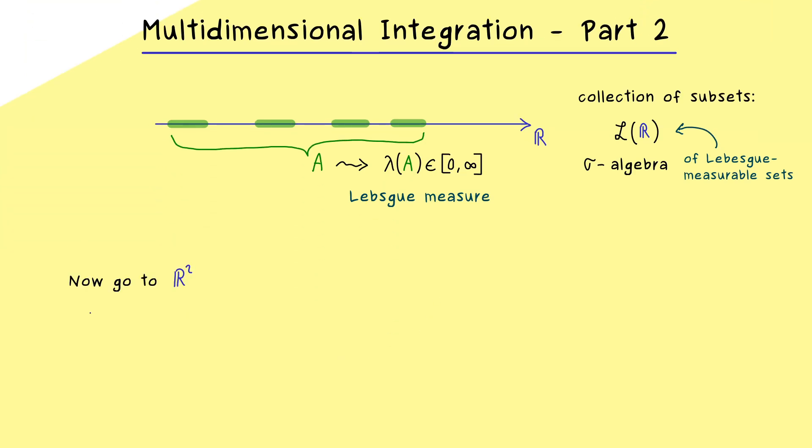Therefore, the next step for us would be to go to the two-dimensional case, where we can generalize the concept of measuring areas. And this is not so complicated, because R2 is just the Cartesian product of the real number line with itself. So what we actually have to do here is simply the construction of the product measure.